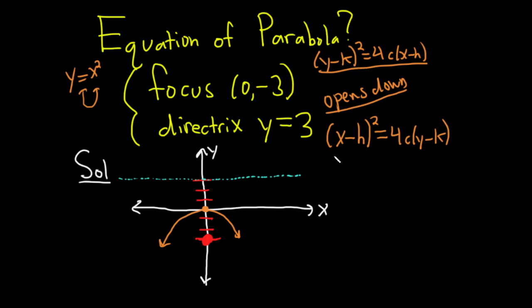All right, so let's plug in what we have. We know the vertex is zero, zero. So H and K is the vertex.